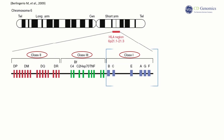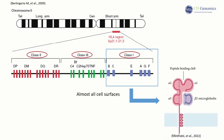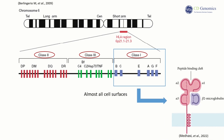HLA Class I molecules are expressed on almost all cell surfaces, with A, B, and C gene loci encoding the products of classical HLA-A, HLA-B, HLA-C molecule alpha chains, as well as non-classical HLA-E, HLA-F, and HLA-G molecules. The confirmed allelic genes are 1,193 for the A locus, 1,800 for the B locus, and 829 for the C locus.